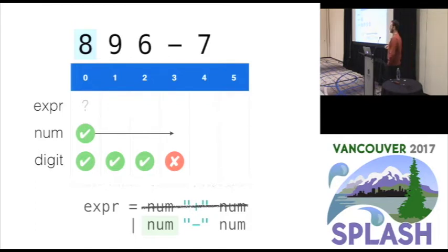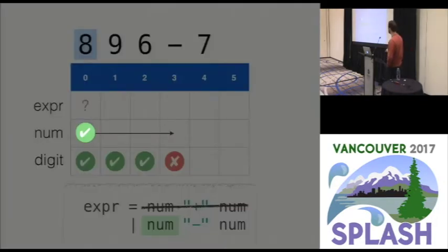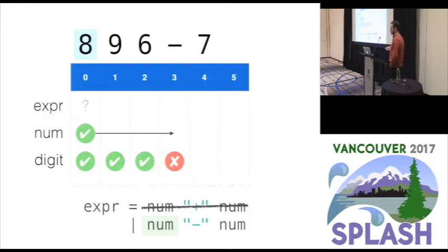In a packrat parser we don't need to redo this work. What we do is every time you evaluate a rule, you look in the memo table to see if you've already evaluated that rule at that input position. In this case we have position 0. We know that num succeeds and that it consumes three characters.